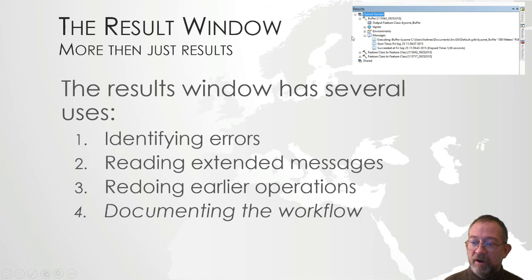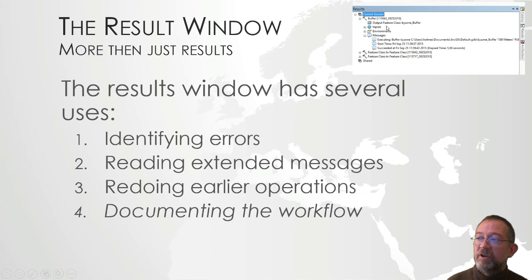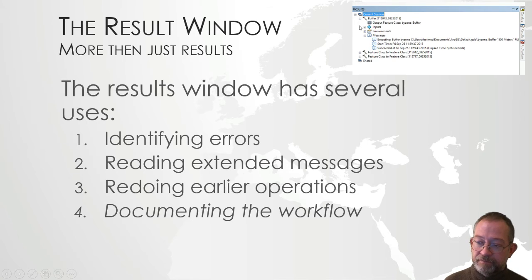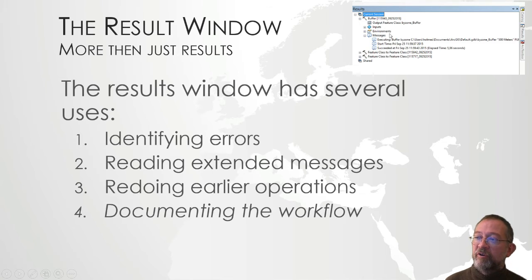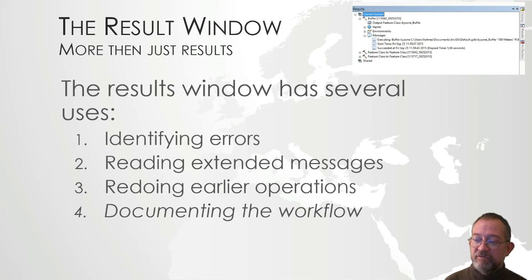So the Results window is not just telling you what has run, but also gives you access to extra information. It gives you the ability to redo previous commands by clicking on tools that have run, and it also functions as some form of documentation of how the process has run.